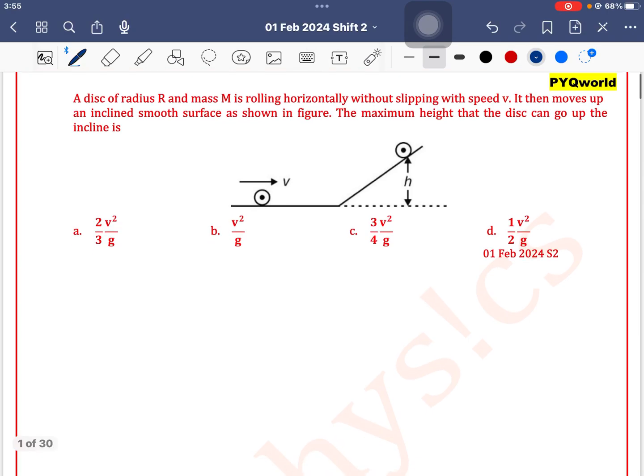A disk of radius R and mass M is rolling horizontally without slipping with speed V. It then moves up an inclined surface as shown. The maximum height that the disk can go up the incline is...